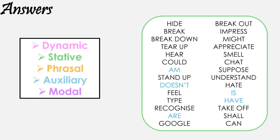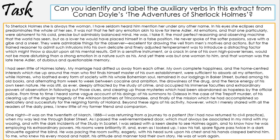A key thing to note with verbs is that the type of verb can change depending on the context of the sentence. And if you want to challenge yourself, try and identify the auxiliary verbs in this extract from the Adventures of Sherlock Holmes by Sir Arthur Conan Doyle.